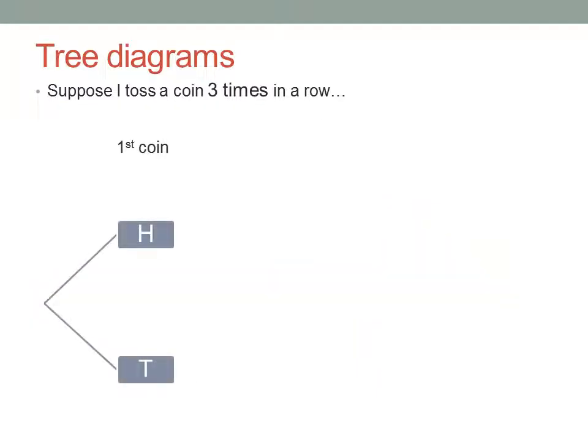The first part of this compound event is the first coin toss. That could result in a head or a tail. There's the first coin toss.